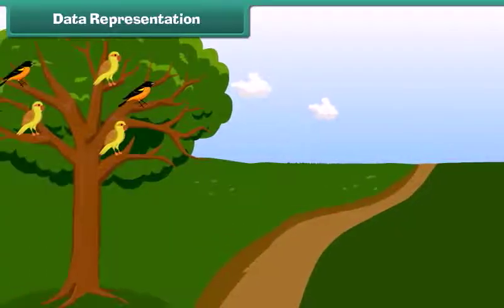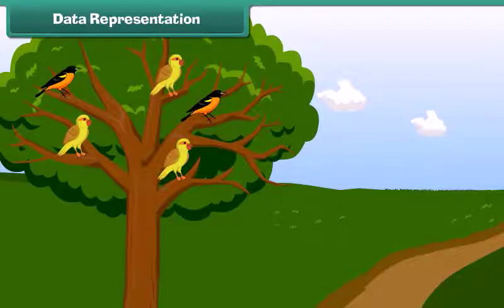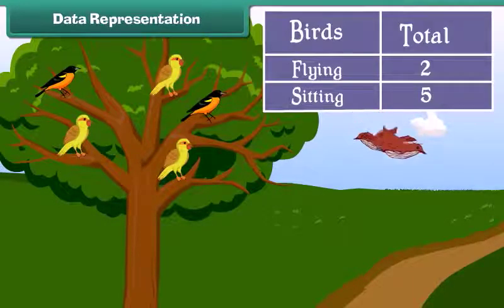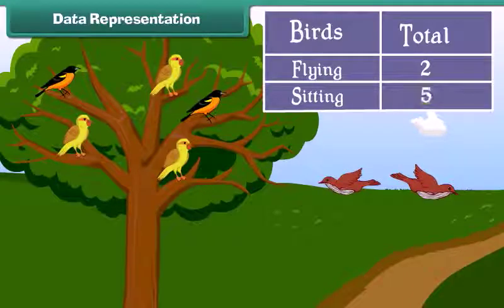It's a pleasant morning. Look at the birds near the branch of tree. We will now find the data of birds from this tree. There are 2 birds which are flying and 5 birds which are sitting on the tree.